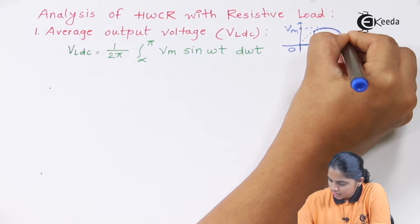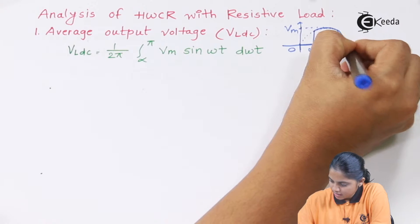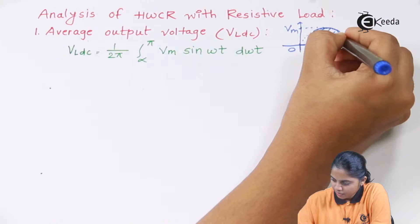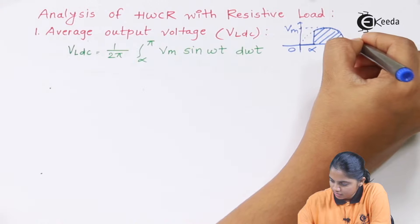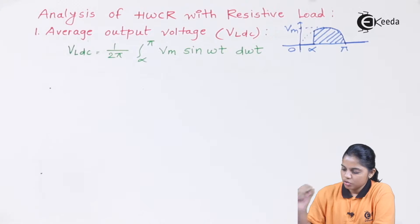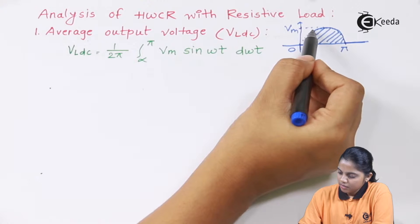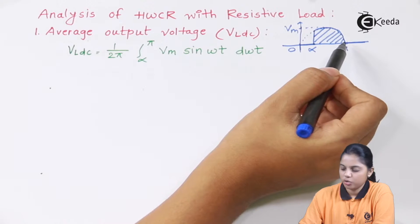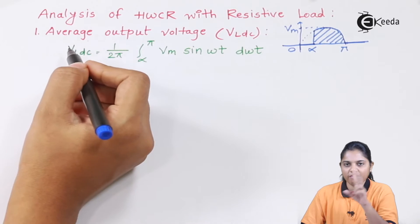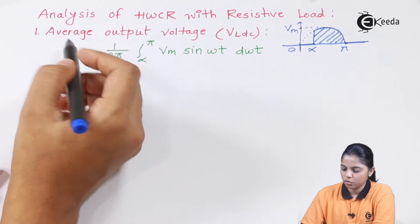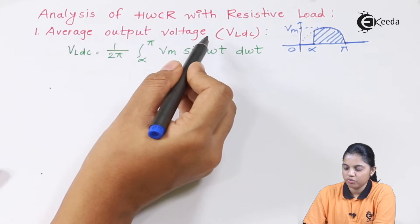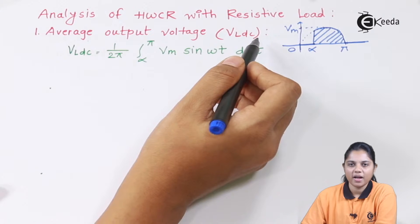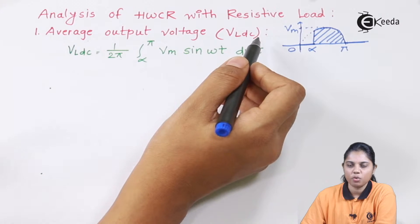From here onwards till pi, that is the half cycle completed, I get the output voltage for the half wave controlled rectifier and then again it will be 0. So now I am going to see what is the maximum output voltage I am going to get. There are two parts in the analysis: one is the average output voltage that is the DC voltage, and then the RMS voltage, root mean square voltage.